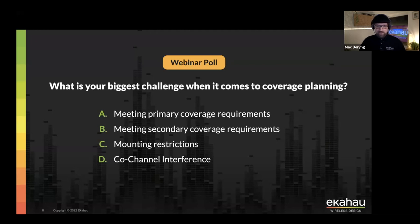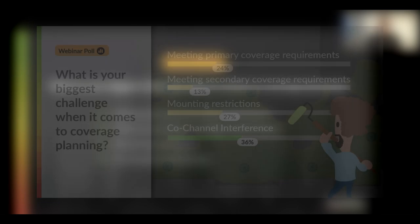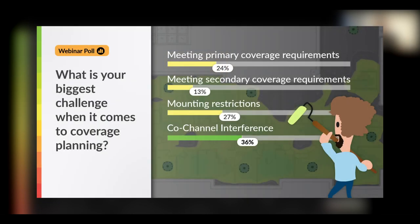In the enterprise environment you might actually be designing for smartphones — even if it's a super capable flagship Android or iOS device, it might still be your LCMI. So let's start a poll: What is your biggest challenge when it comes to coverage planning? A — meeting primary coverage requirements, B — meeting secondary coverage requirements, C — mounting restrictions, or D — co-channel interference, also known as channel contention.